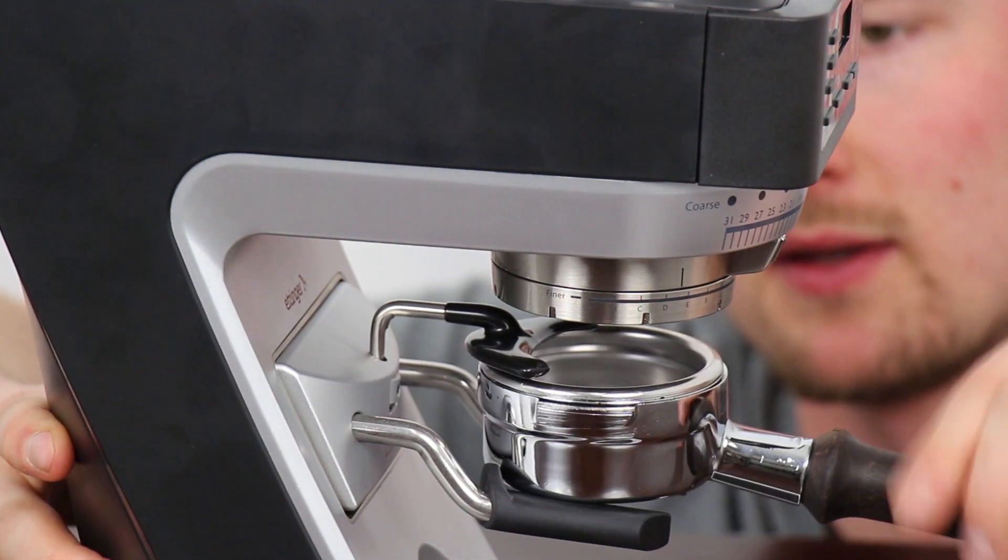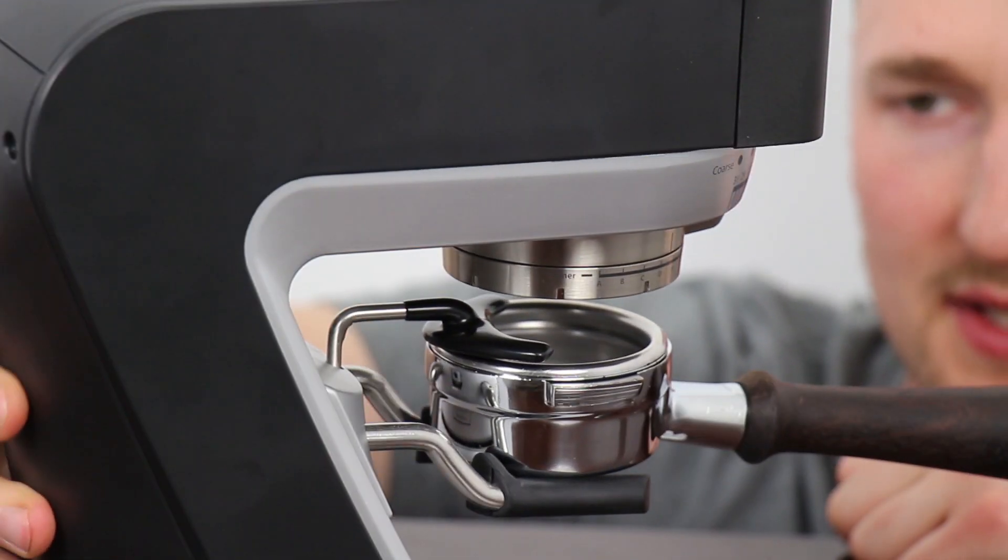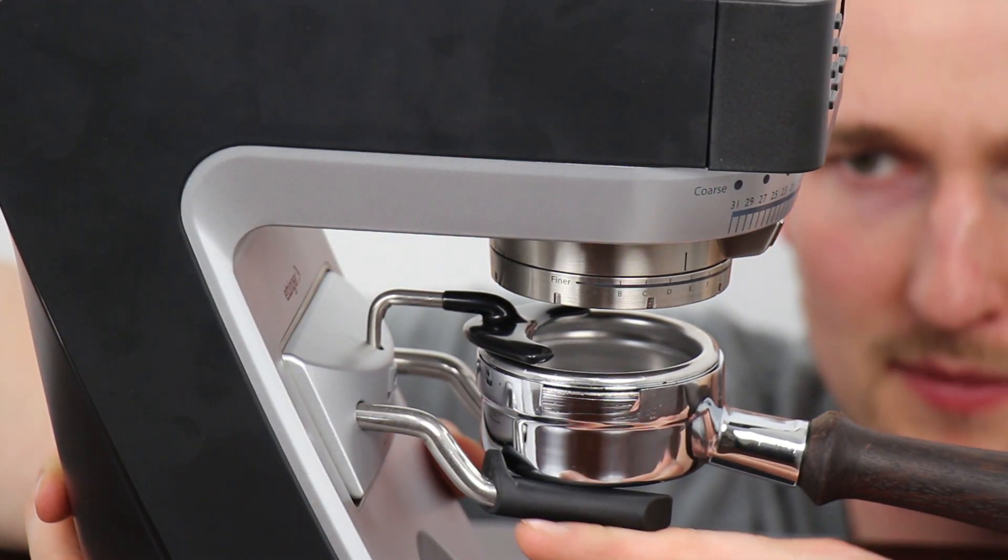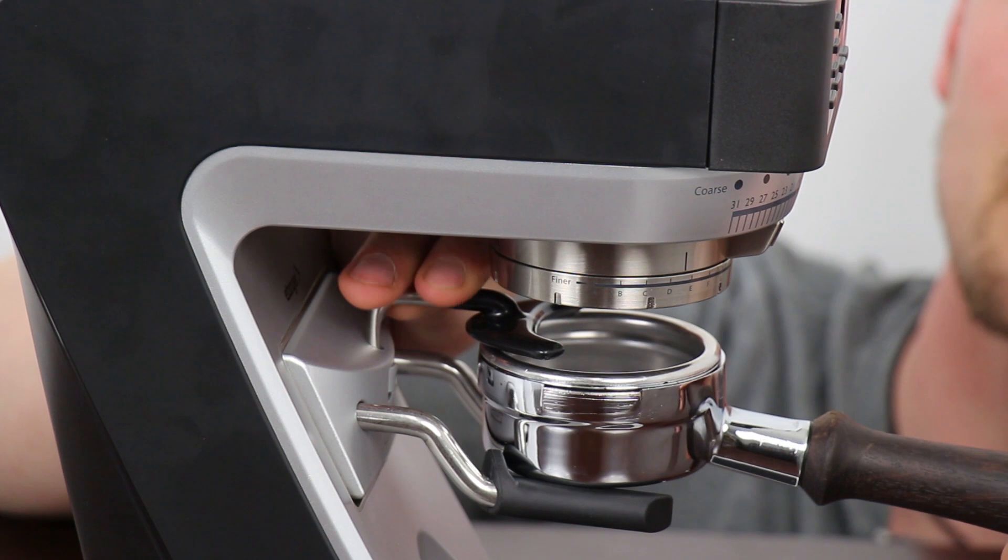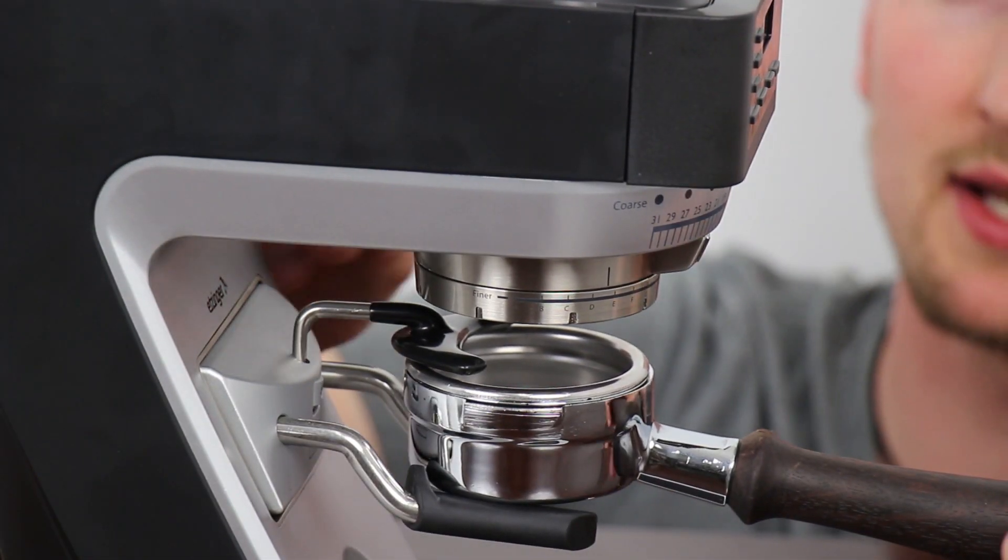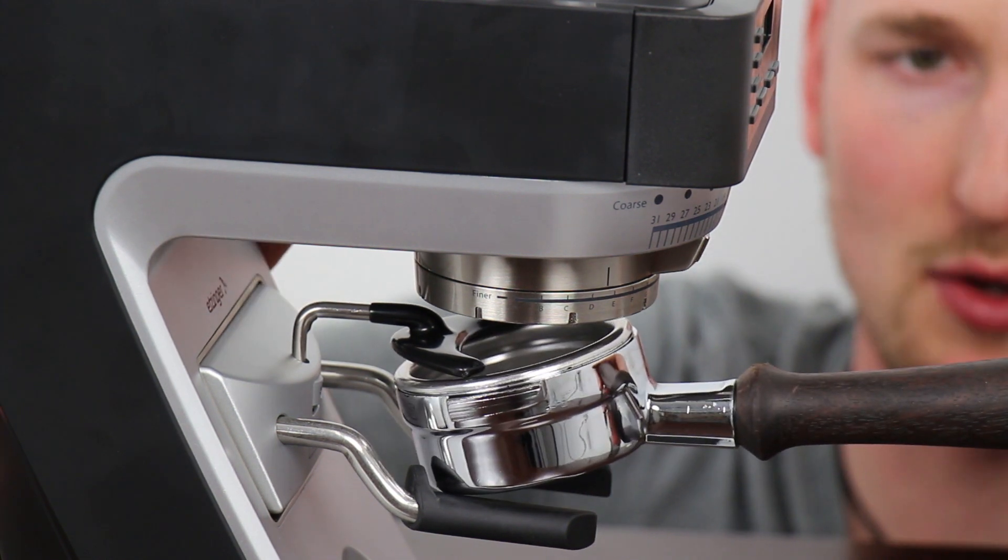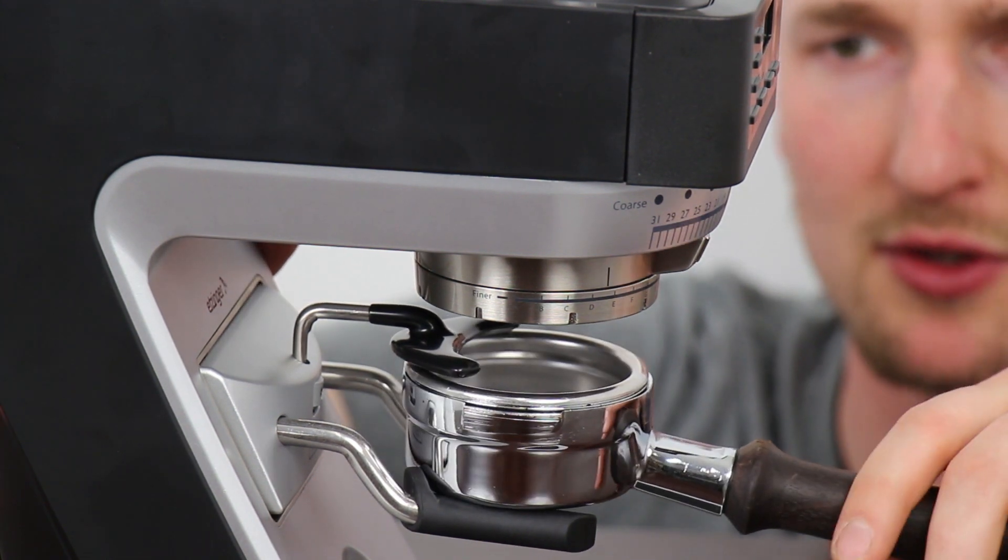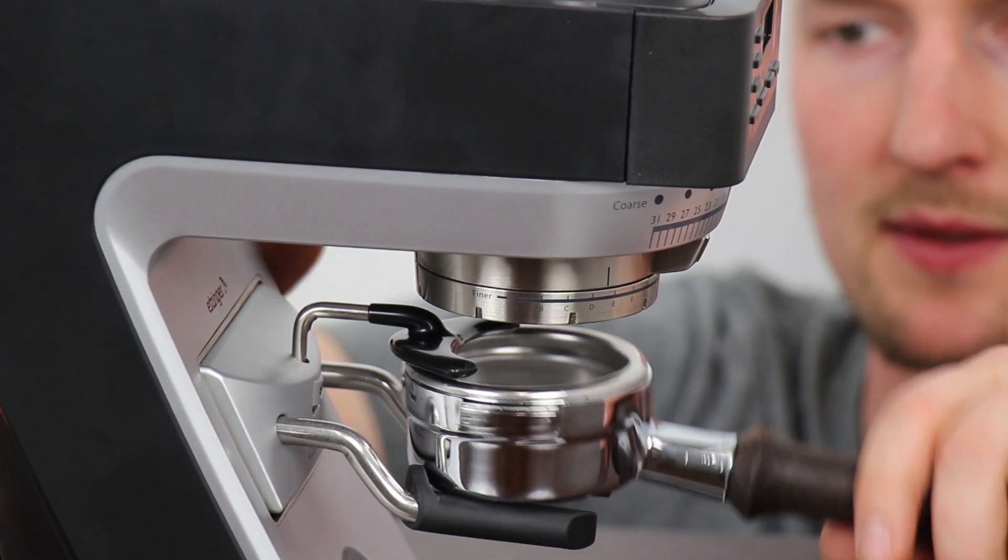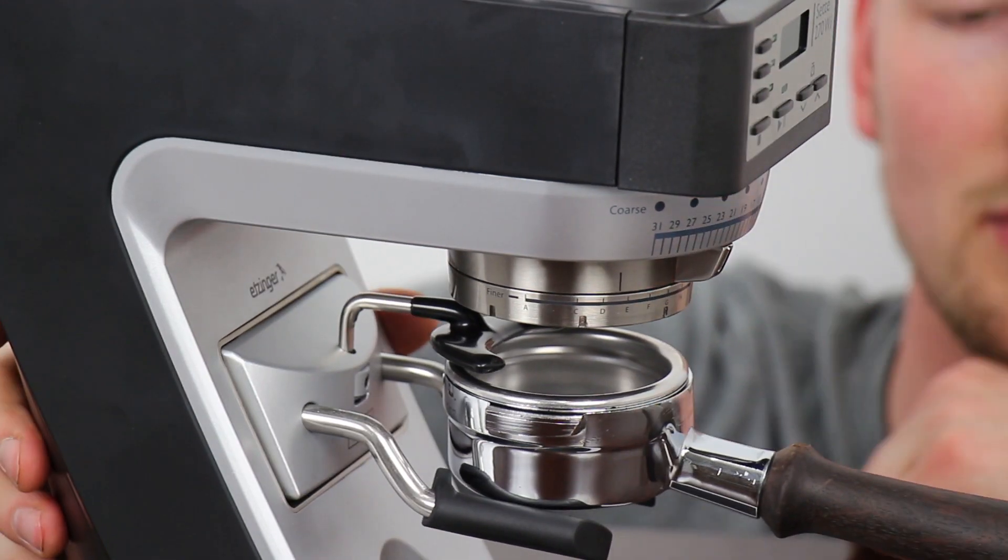And now I need to check my work. What you're looking for is that the portafilter sits relatively level on the arm and that it's well supported by the hook. You don't want it to be a very tight fit so it holds the portafilter up and you don't want it to be a really loose fit because then it'll wiggle a little bit more. So a happy medium is what I have shown here.